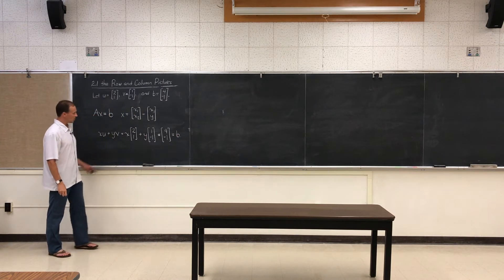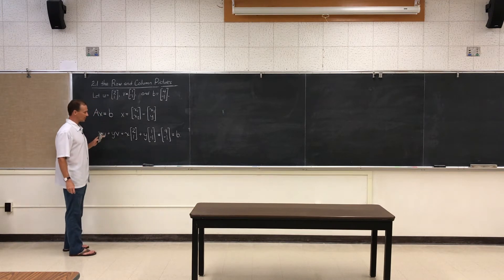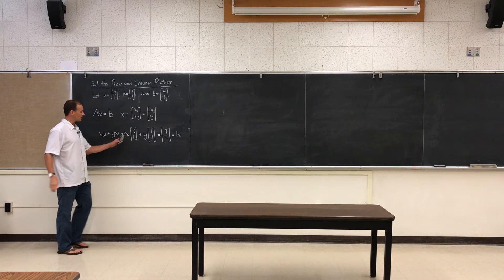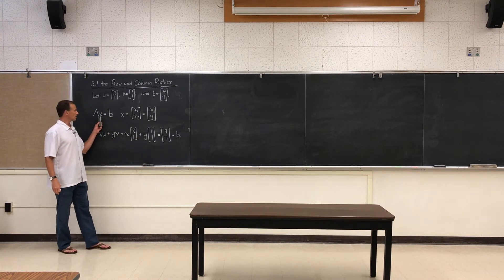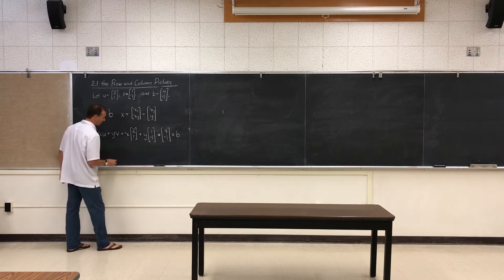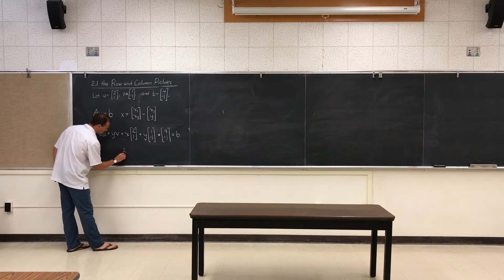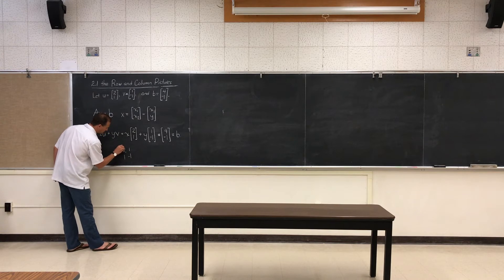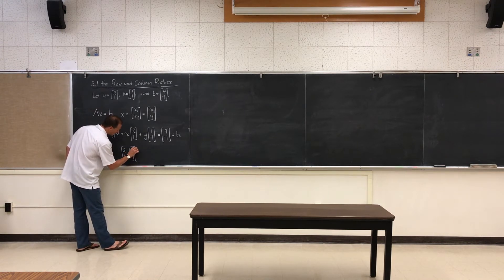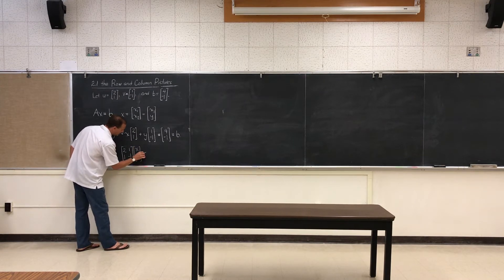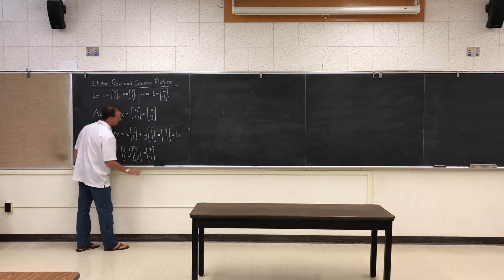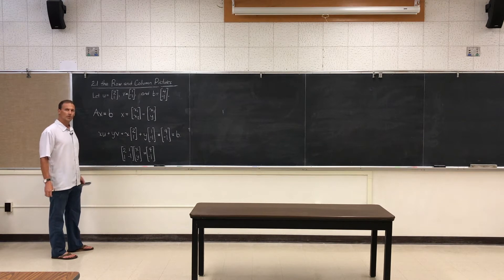Now, in our last video, we saw that a linear combination can then be written as the matrix equation AX equals B. Our vectors become the columns of the matrix A. Our scalars X and Y become the components of the vector X and B stays as B. So let's take this one step further and let's write this as the matrix equation.